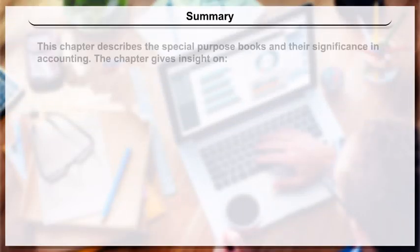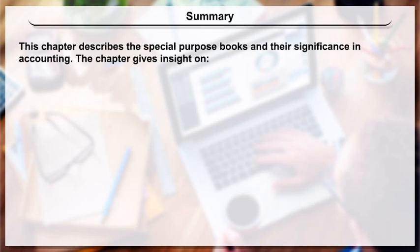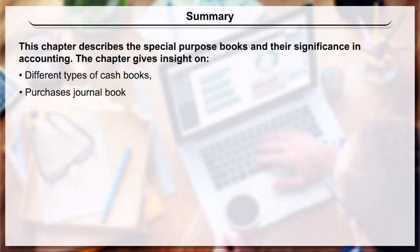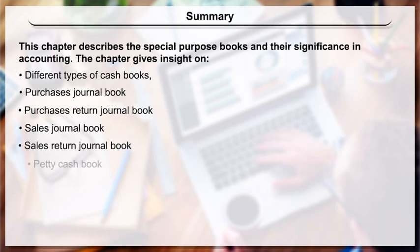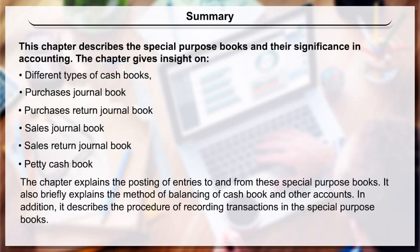Summary: This chapter describes special purpose books and their significance in accounting. It covers different types of cash books, purchases journal book, purchases return journal book, sales journal book, sales return journal book, and petty cash book. The chapter explains the posting of entries to and from these special purpose books, the method of balancing the cash book and other accounts, and the procedure of recording transactions in the special purpose books.